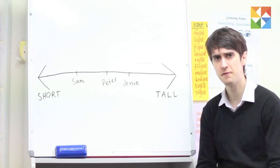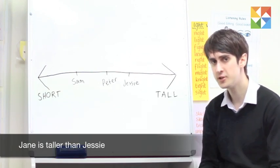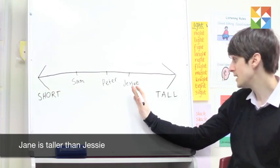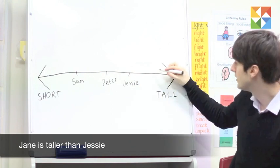The second piece of information we're given is that Jane is taller than Jesse. So we find Jesse, and we know that to the taller side of her will be Jane.